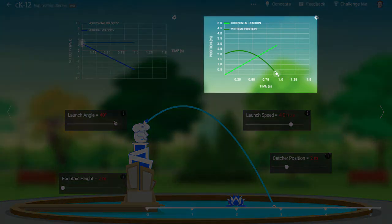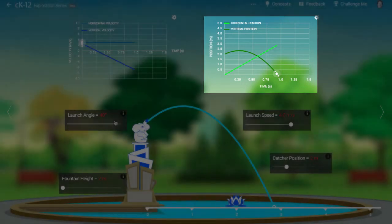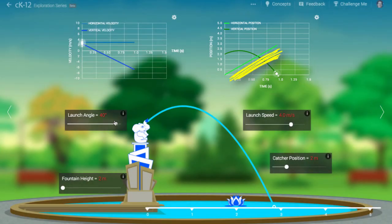The graph at right represents, separately, the horizontal and vertical positions of the water stream with time. The horizontal position increases linearly with time. This is because the horizontal speed is constant. The vertical position changes parabolically or quadratically. This is because the vertical velocity is constantly changing.